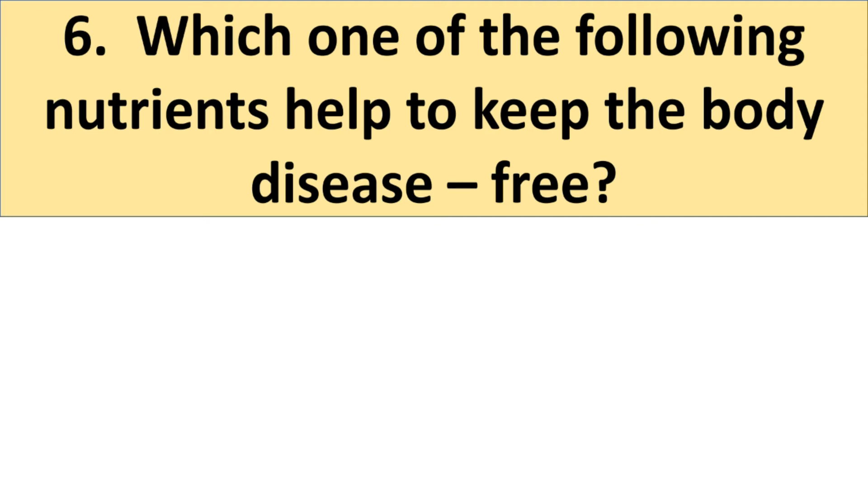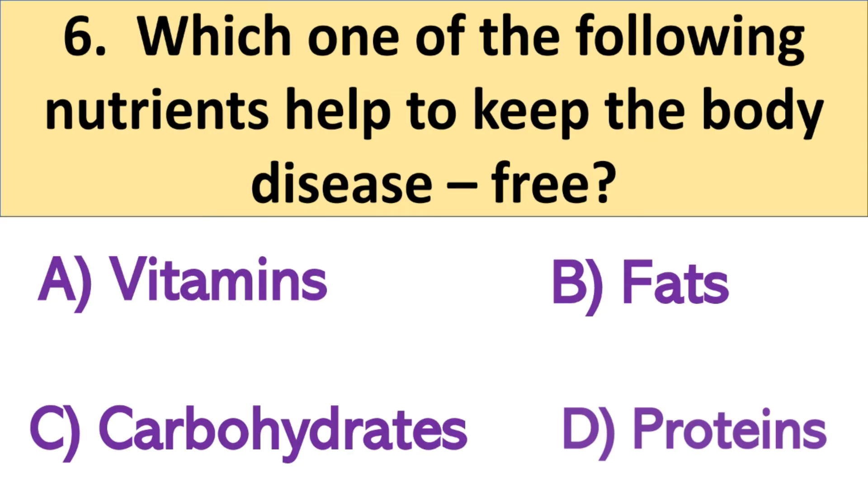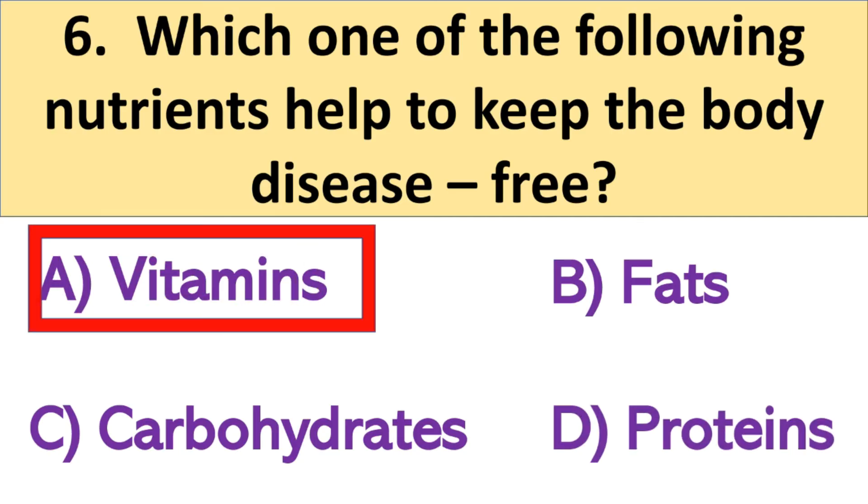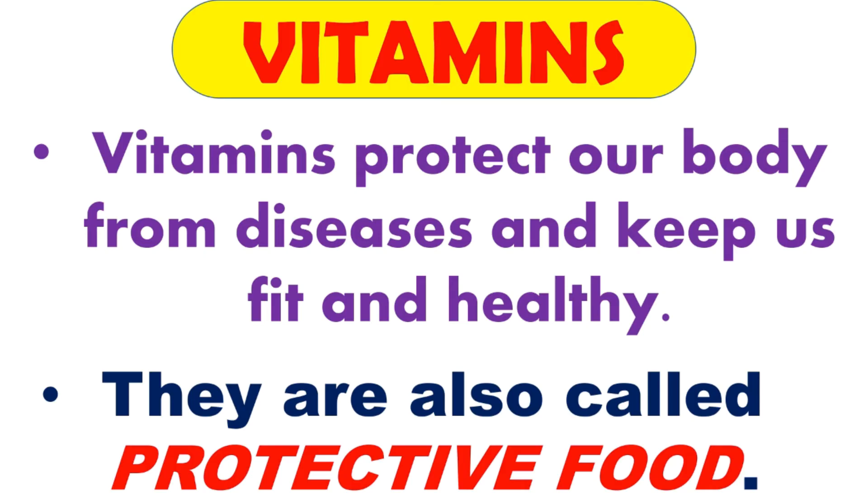So come to the next question, which one of the following nutrients help to keep the body disease free? And your options: A. Vitamins, B. Fats, C. Carbohydrates and D. Proteins. And the right answer is A. Vitamins. So vitamins protect our body from diseases and keep us fit and healthy. And the food rich in vitamins are also known as protective food because they protect us from various diseases.